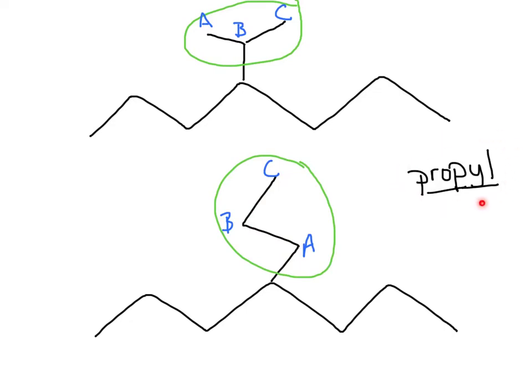However, because we have three carbons, and this is the first time we see this, we don't see this with ethyl because there is no carbon in the middle. And so when I get to propyl though,